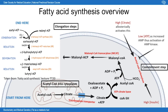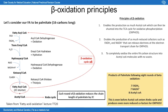A useful memory aid: the steps of fatty acid synthesis are exactly the reverse of beta oxidation. Beta oxidation goes: oxidation → hydration → oxidation → thiolysis. Working backwards and taking the opposite of each step gives fatty acid synthesis: condensation → reduction → dehydration → reduction. So you can learn beta oxidation and simply reverse it for synthesis.